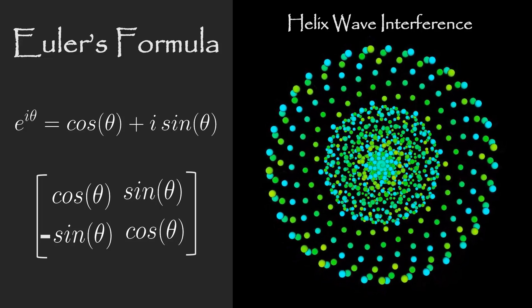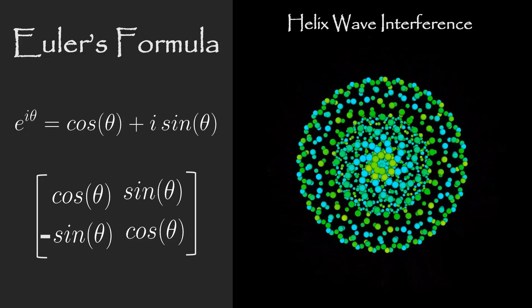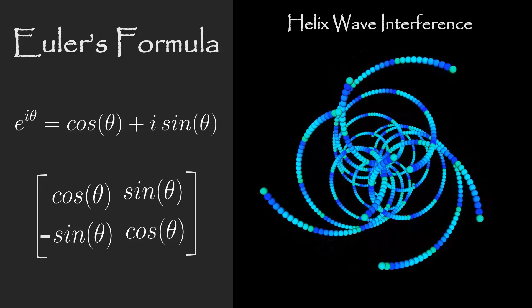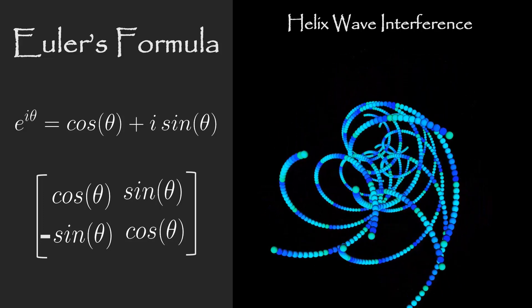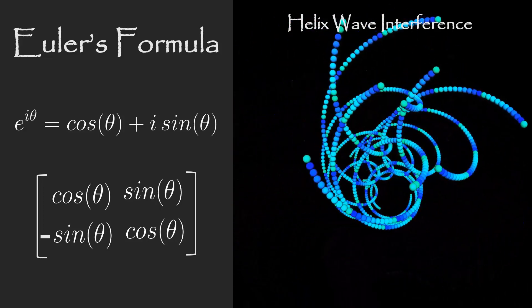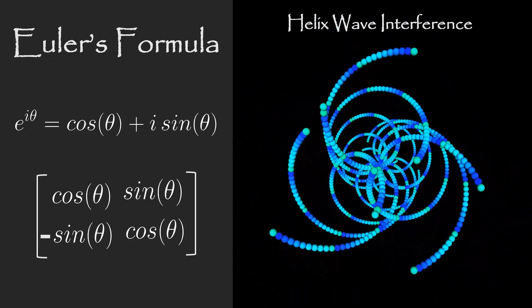In computer science, this is referred to as a transformation matrix. This kind of formula is used in computer graphics all the time to generate rotations and circular motions. All of the animations that you see here on the right were created using this version of Euler's formula.